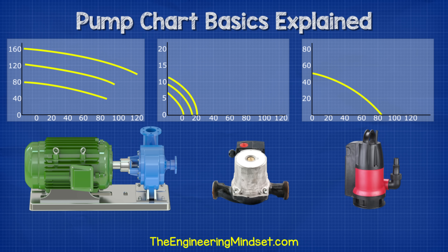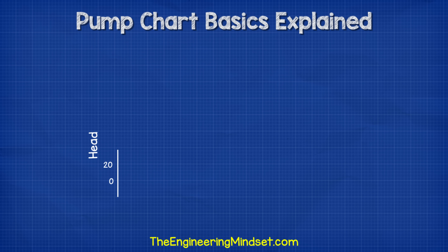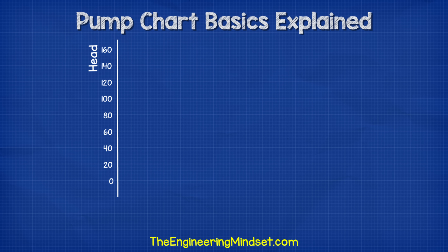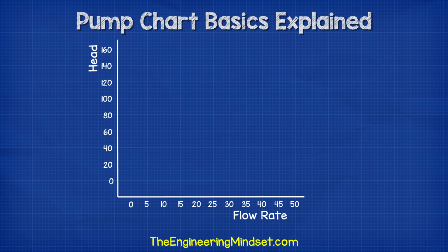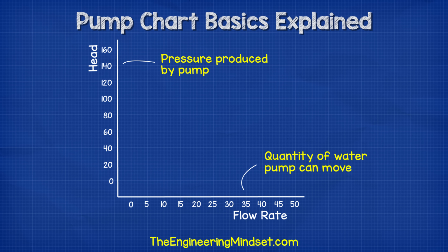Each type of pump has a different chart and the data plotted on them also varies with the model. The first thing we notice is that on the main vertical y-axis we have the head pressure and on the horizontal x-axis we have the flow rate. Basically speaking, the head is pressure and the flow rate is how much water the pump can move.